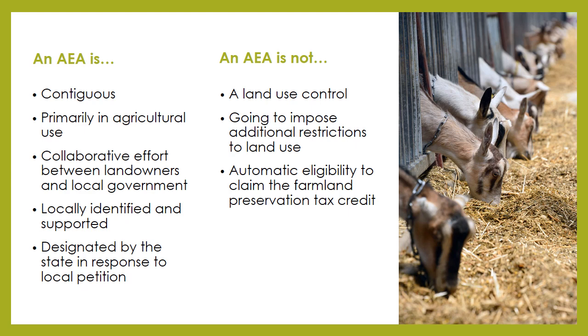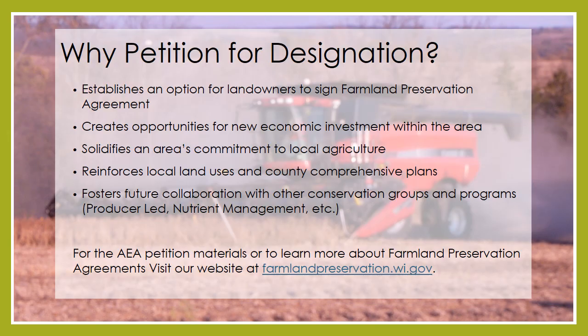An AEA is not automatic eligibility to claim the farmland preservation tax credit. Having lands in an AEA does enable the option for landowners to opt into the program by signing a 15-year farmland preservation agreement. Designating an AEA establishes an option for landowners to sign these 15-year contracts with the state, in which a landowner agrees to keep lands in agricultural uses while maintaining good stewardship practices. In return, landowners can claim the farmland preservation tax credit.